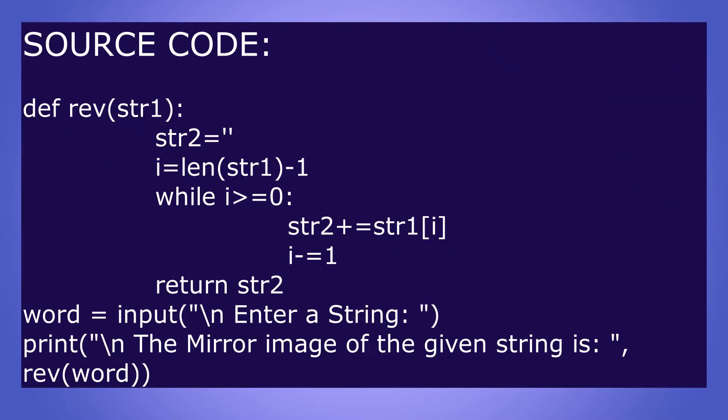Define rev of string one. String two equals empty, i equals length of string one minus one. While i is greater than or equal to zero, string two plus equals string one of i, i minus equals one. Return string two. Word equals input, enter a string. Print the mirror image of the given string, then rev of word.